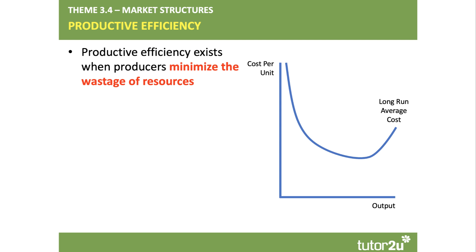We minimise the wastage of resources and hopefully we also minimise the unemployment of resources. You'll be familiar, for example, with a productive possibility frontier. Any point that lies within the curve, we're not making full effective use of our factors of production. So productive efficiency is essentially about minimising waste, but we normally use the concept by thinking about the unit cost of supply.